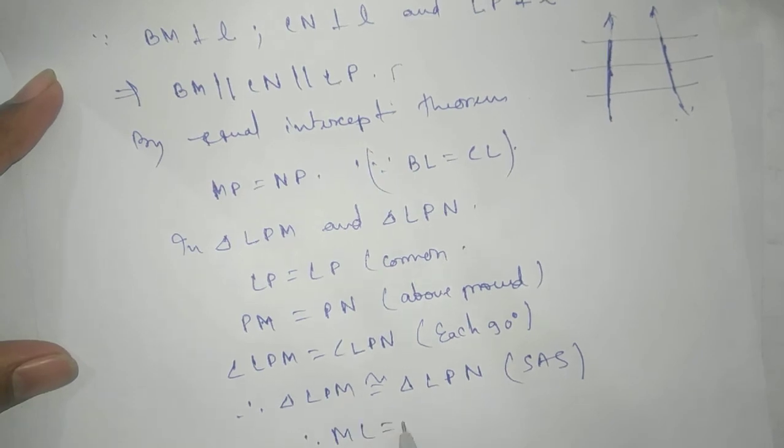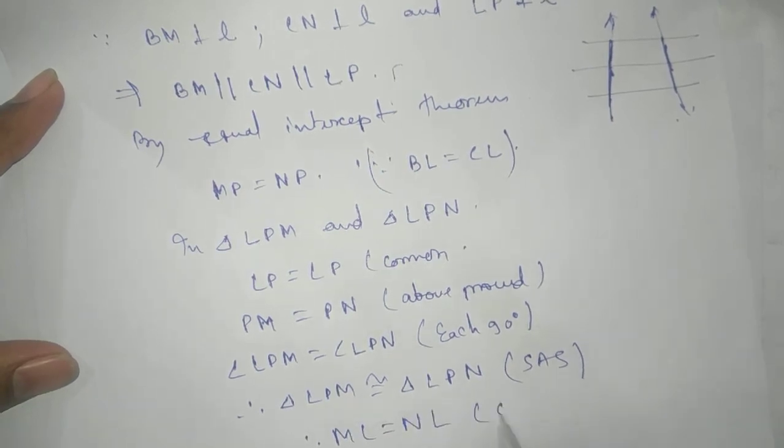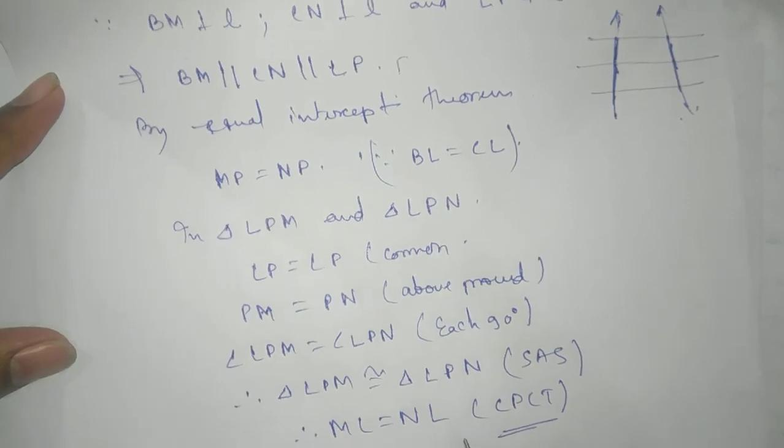Therefore ML equals to NL by CPCT, corresponding parts of congruent triangles.